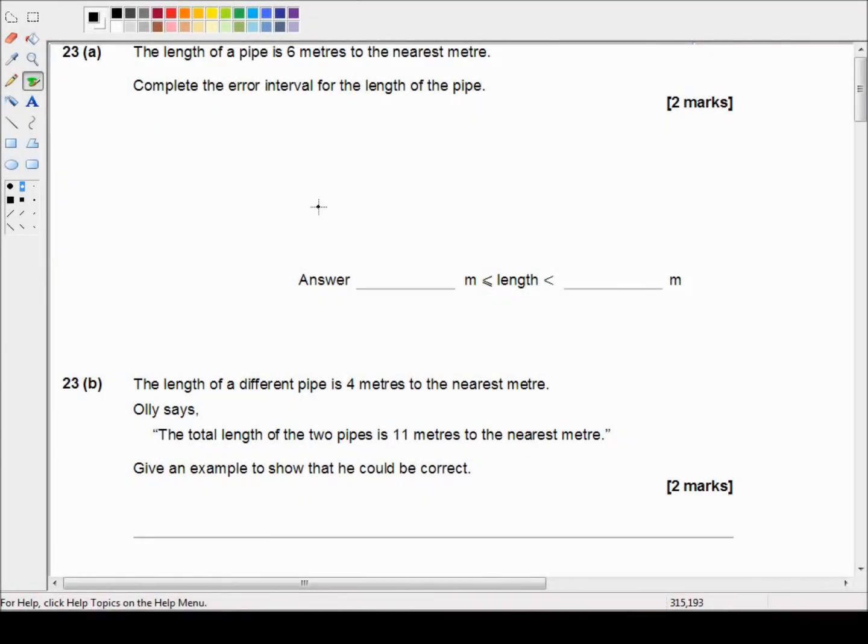Hello and welcome to another AQA GCSE revision video. In this video we're looking at the June 2017 past papers. This is the third paper in the foundation tier. It is a calculator paper so we are allowed to use calculators and we're picking up in question 23.